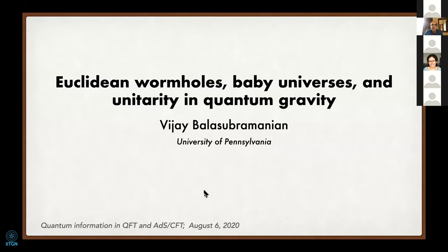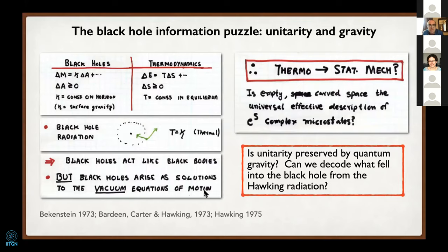Let me start by reminding you what the basic issue we want to understand is. Going back 50 years, we know that black holes have in their dynamics an interesting analogy with the laws of thermodynamics. As Bardeen, Carter, Hawking, and Bekenstein showed in 1973, black holes satisfy rules of mechanics where the change in mass is surface gravity times the change in area, the area is non-decreasing in any classical process, and the surface gravity kappa is constant on the horizon.